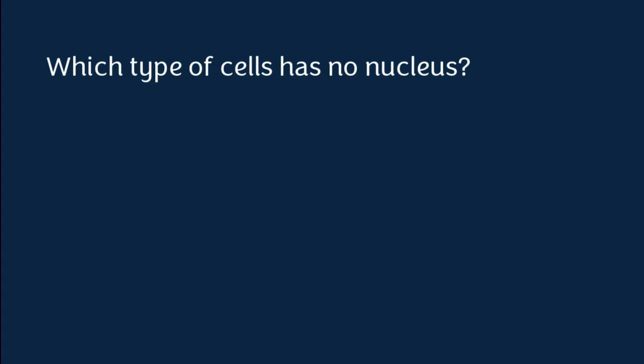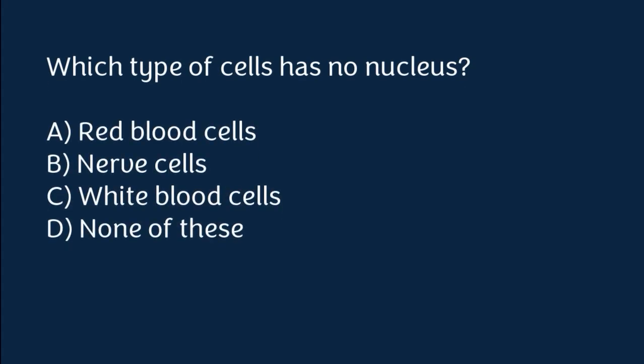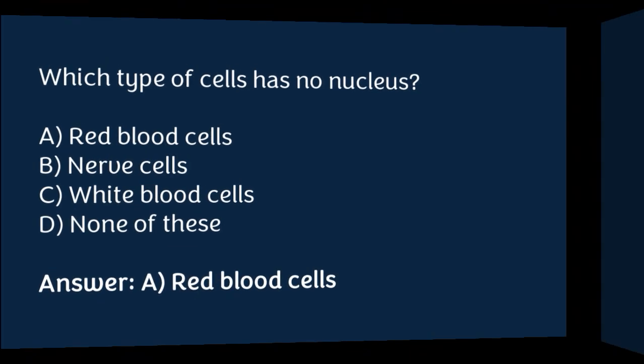Which type of cells has no nucleus? Red blood cells, nerve cells, white blood cells, or none of these. The correct answer is option A. Red blood cells are the type of cells which have no nucleus.